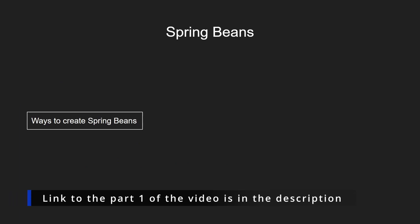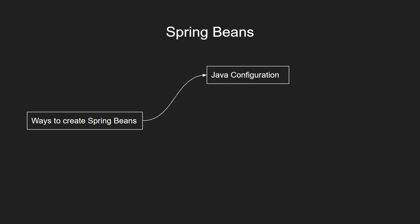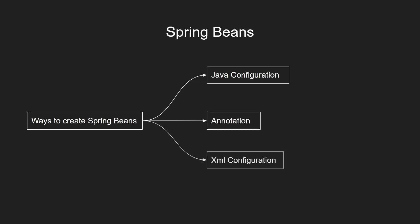There are three different ways to create Spring beans. The first one is using Java configurations, the second one is using annotations, and the third one is XML configuration.